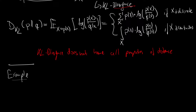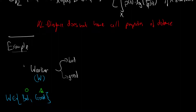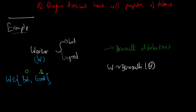Let us look at an example where x is discrete. We look at the weather, and in simple terms the weather can either be bad or good. We call our weather variable W, which takes values in {bad, good}, encoded as 0 and 1. This rings a bell — this is the Bernoulli distribution. So W is distributed according to a Bernoulli with parameter theta, where theta is the probability of good weather.